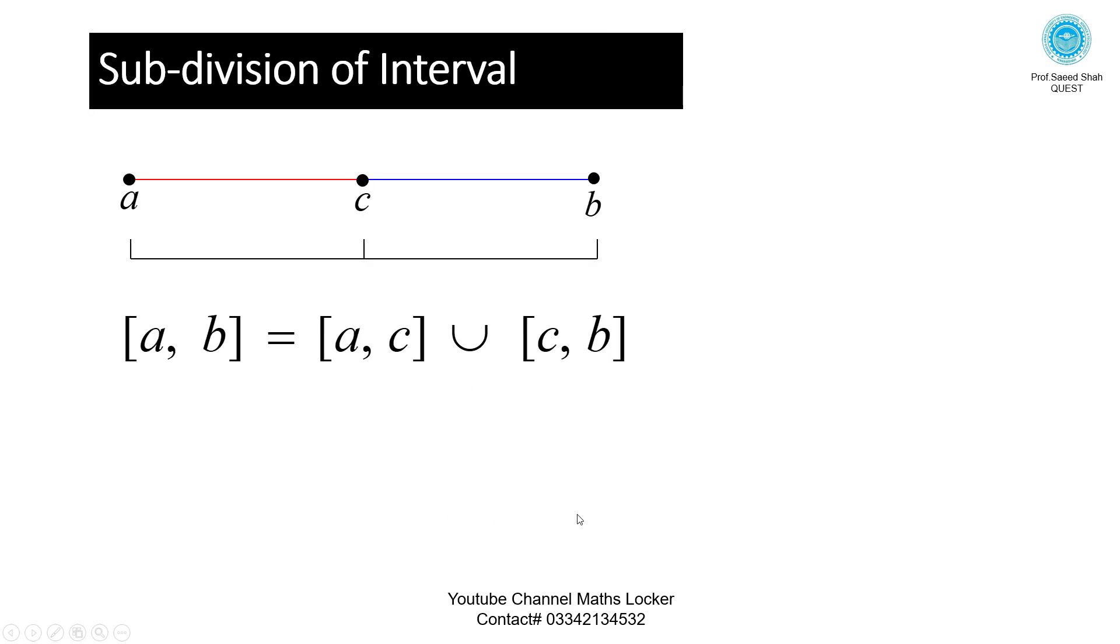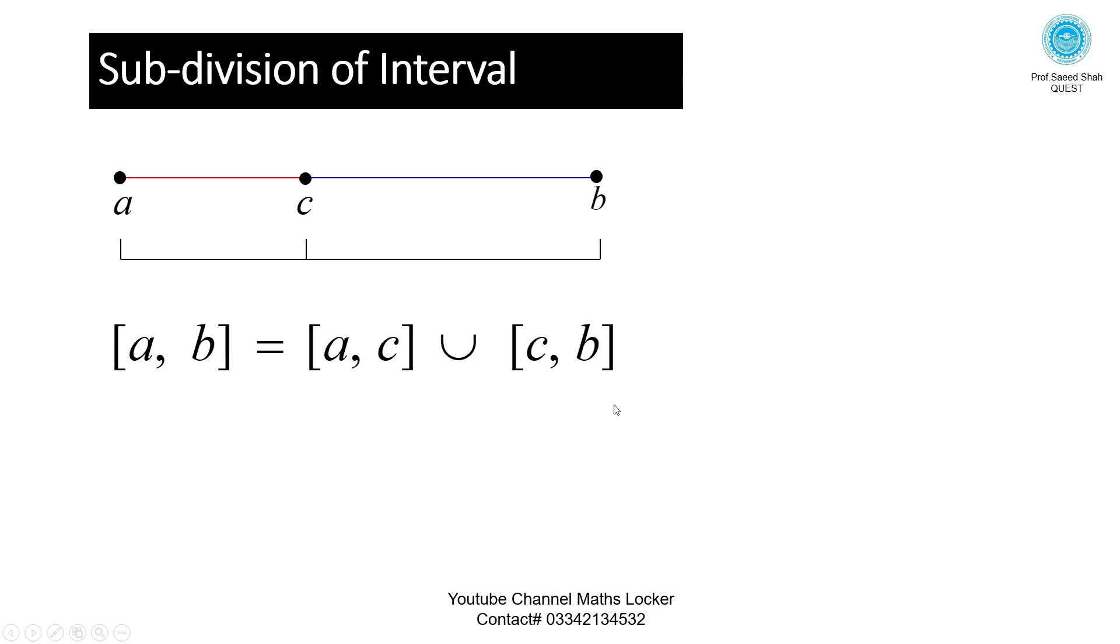Subdivision of interval: you can divide the interval [a, b] into two equal pieces, a to c and c to b. So you can write the interval [a, b] = [a, c] ∪ [c, b]. But here c is not a midpoint, so the writing procedure is the same.